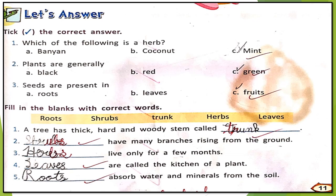Number five: blanks absorb water and minerals from the soil — that is roots (R-O-O-T-S), written with a capital R because it begins the sentence.